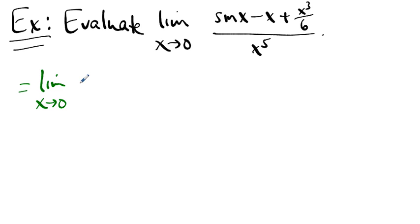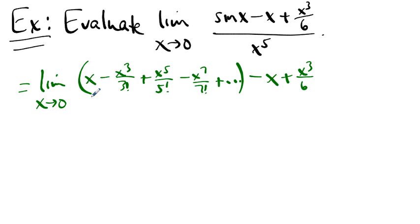Well, we know what this is. This is x minus x cubed over three factorial plus x to the fifth over five factorial minus x to the seventh over seven factorial plus and so on, minus x plus x cubed over six, over x to the fifth. Well, what happens? This x and that x go away. This negative x cubed over six and this positive x cubed over six go away.